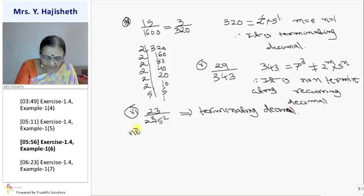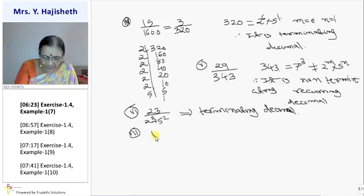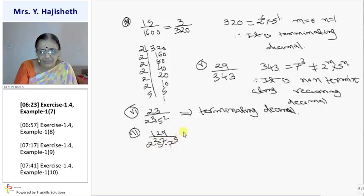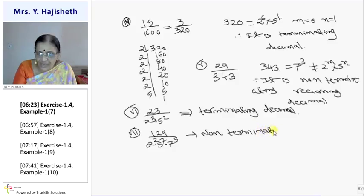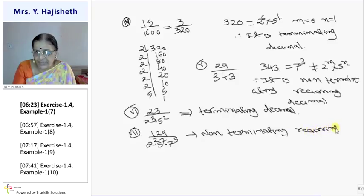The seventh sum is 129 upon 2 raise to 2 into 5 raise to 7 into 7 raise to 5. This is non-terminating, because Q has a prime factor other than 2 and 5. So it is non-terminating recurring decimal.